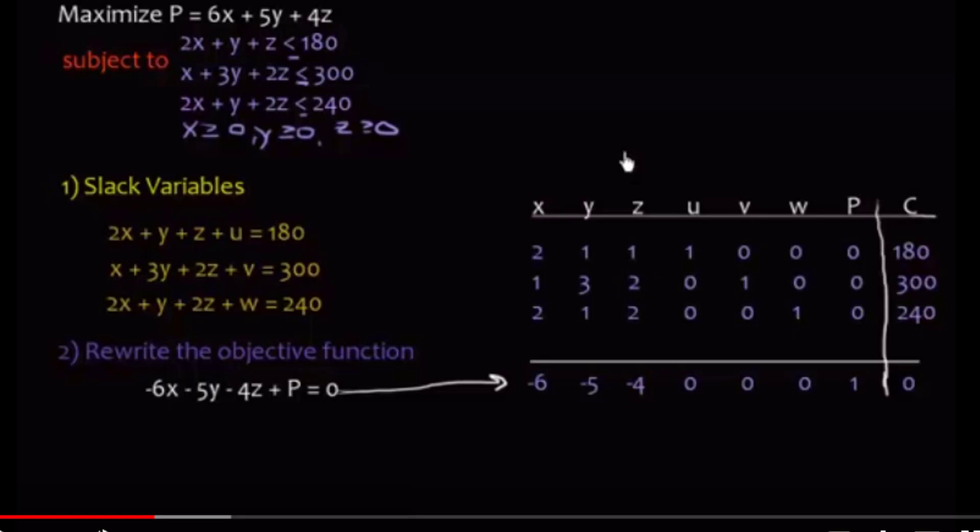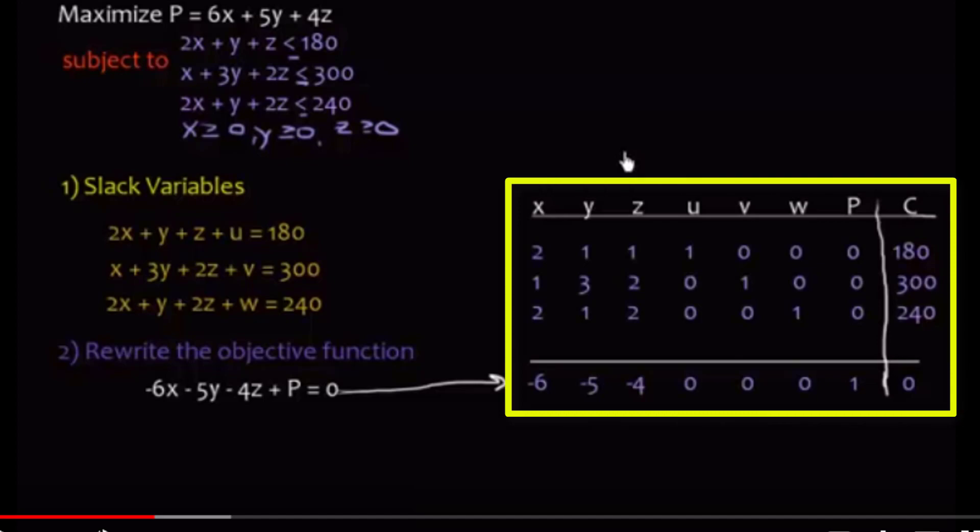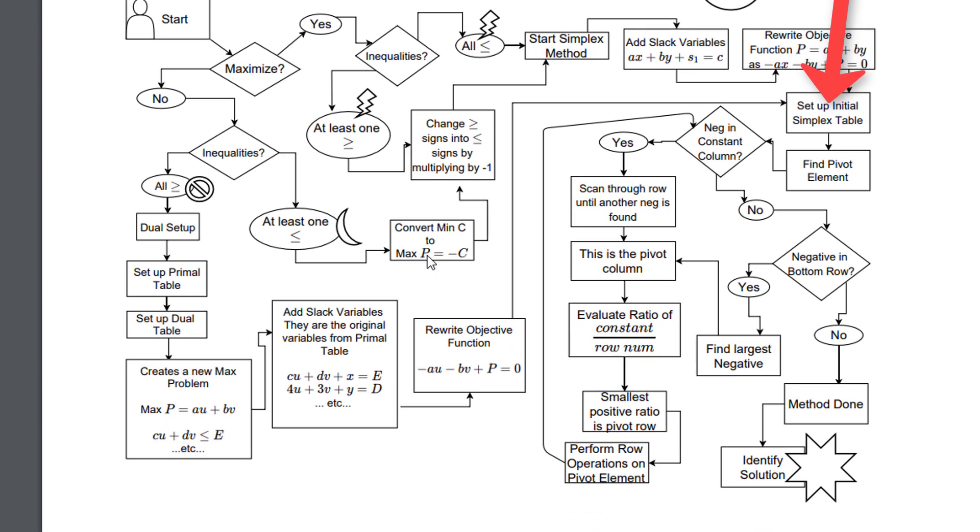So here it is in the YouTube channel. Now down here it goes over how you choose your pivot in the simplex table. So you go through this, and then down here it says after performing the row operations, it'll take you back up to where you'll start a new iteration. And again, this section here will tell you how to choose your pivot, then what to do with that pivot.